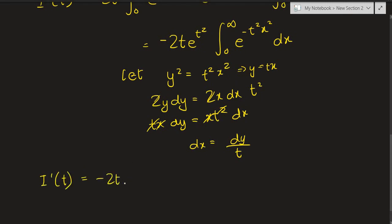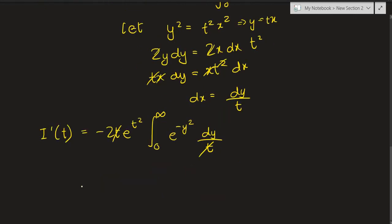According to the substitution, I prime of t becomes negative 2t times e to the t squared power times the integral. For the bounds: when x is 0, t squared x squared is 0 so y is also 0; and when x tends to infinity, y equals tx, so multiplying a finite number by infinity still gives infinity. So the bounds remain 0 to infinity, and we have e raised to negative y squared times dy over t. This t and the outer t cancel nicely.